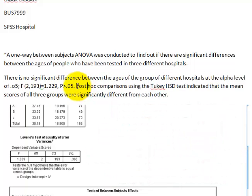Remember that: if you don't have a significant difference, if your p-value is not less than 0.05, then you do not run a post hoc test. That's all there is to that.